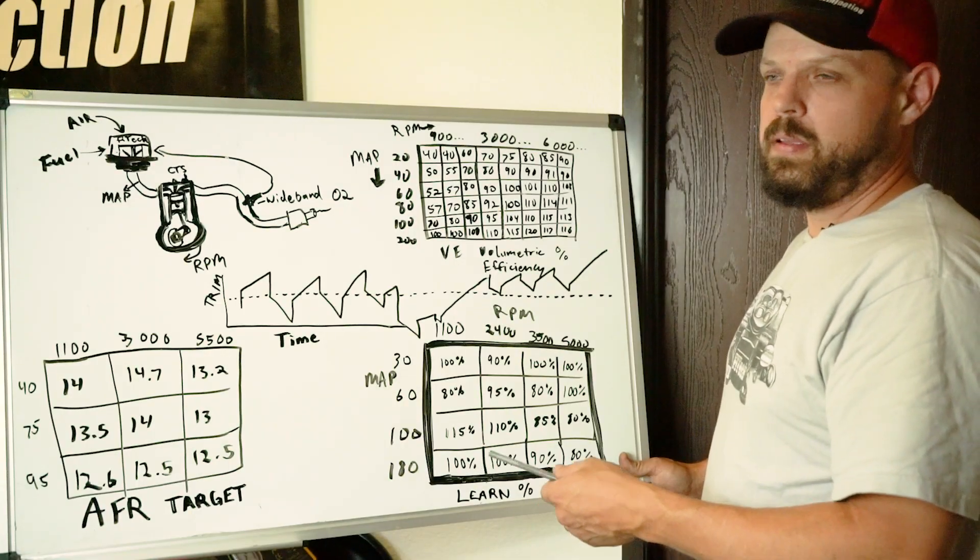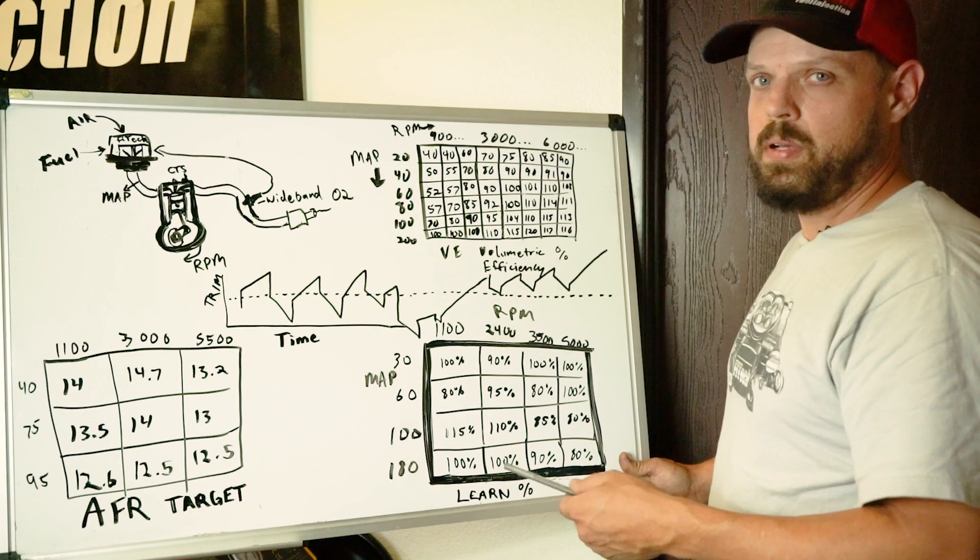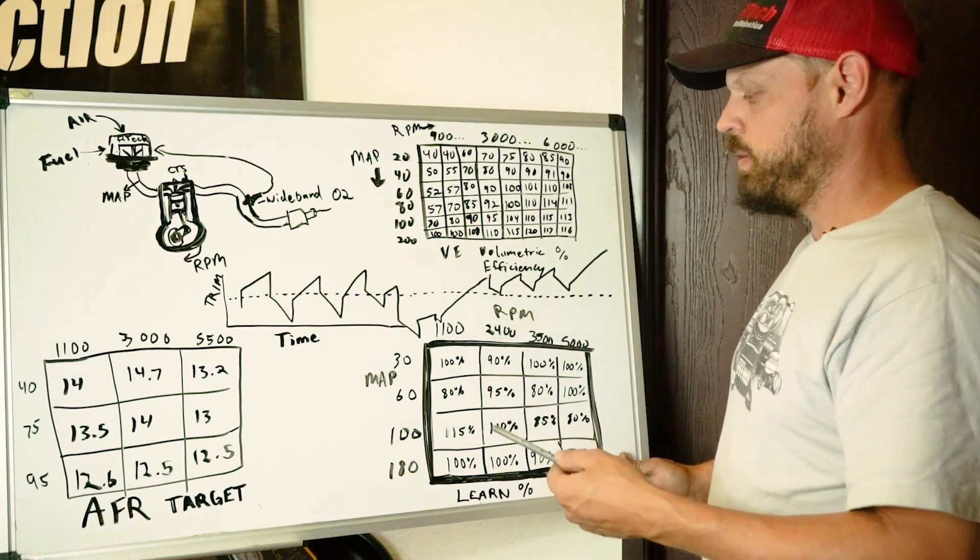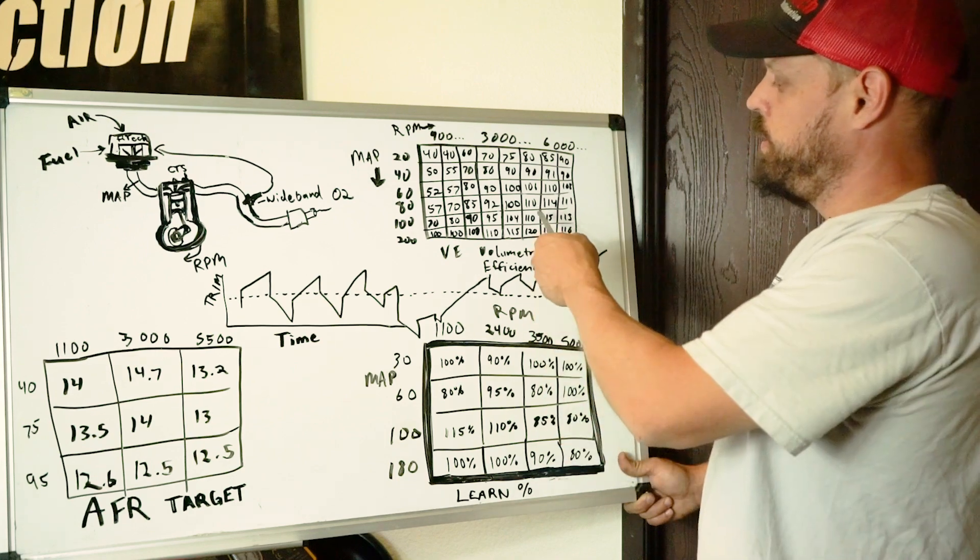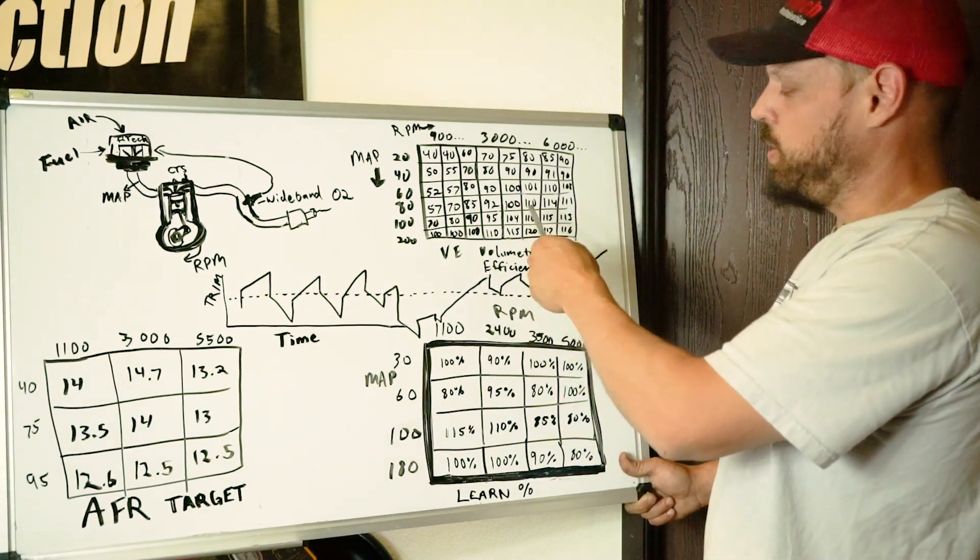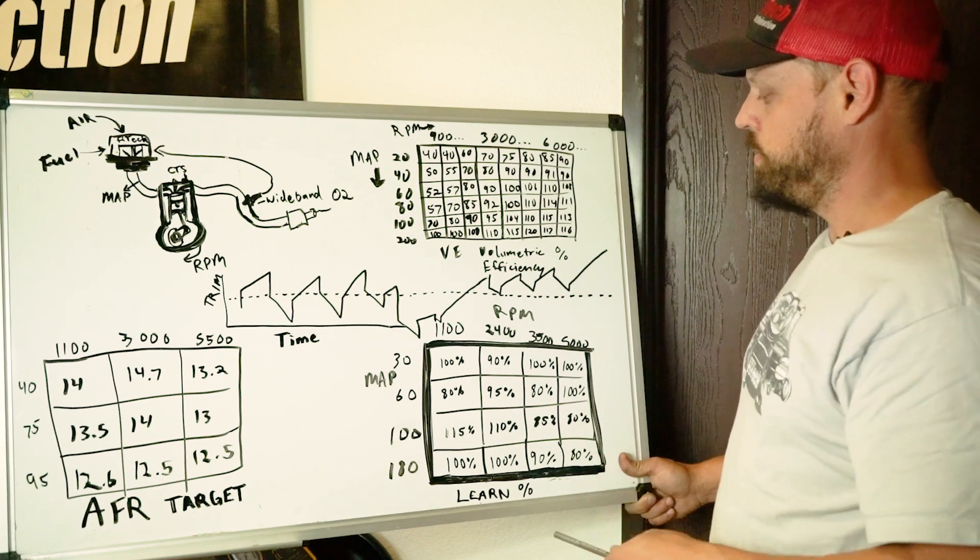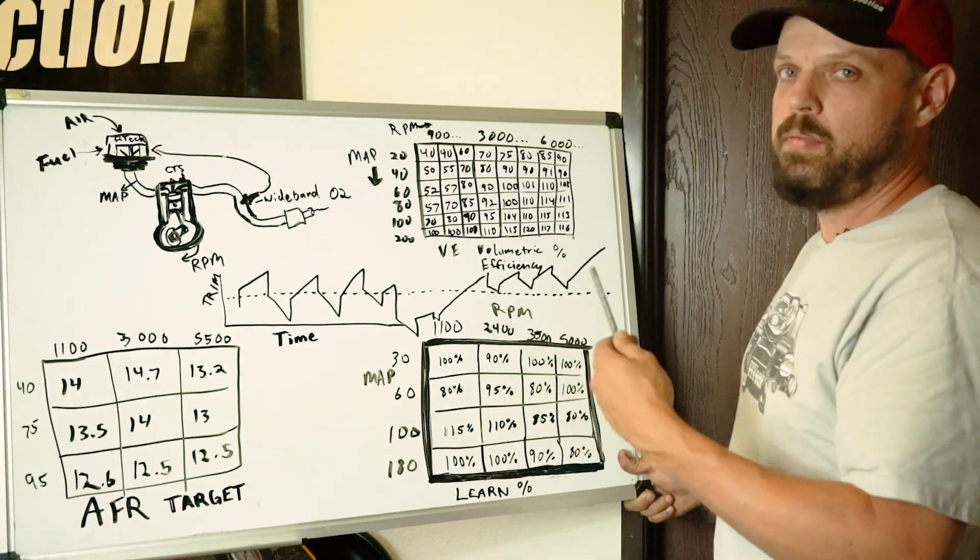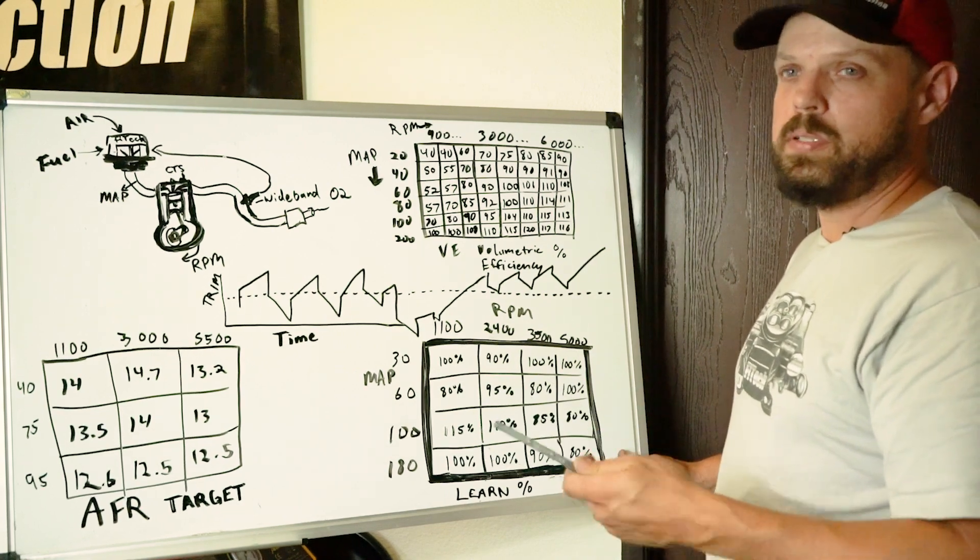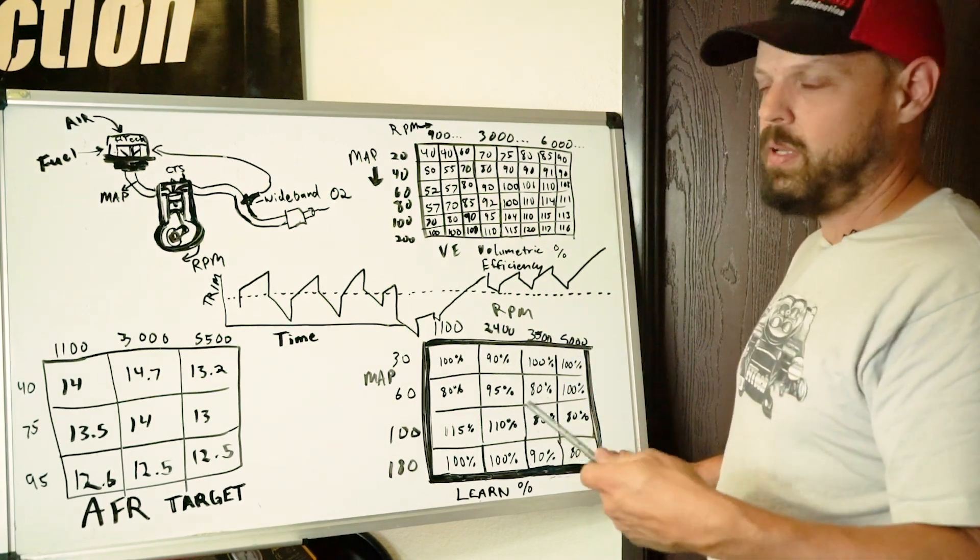The AFR learn data in the data logging group can also show you whether you've got the right cam value by looking at the higher RPM high loads. If it's learning down, you might have a cam number that's too big at the higher RPM high loads. If it's learning way up, your cam number could be off, or you might actually be losing fuel pressure at high RPMs and high fuel flows, and you don't know it.